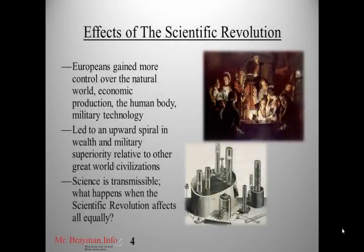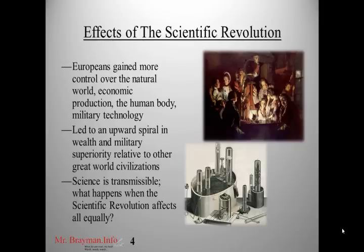Europeans gained more control over the natural world — economic production, the human body, military technology — and this led to an upward spiral in wealth and military superiority relative to other great world civilizations. As part of this project, we're trying to figure out why Europe became so much richer and more powerful than other parts of the world at this time, especially since they weren't starting with any kind of advantage. The scientific revolution was a big change that led to that — science gives us better guns and that makes us more powerful.